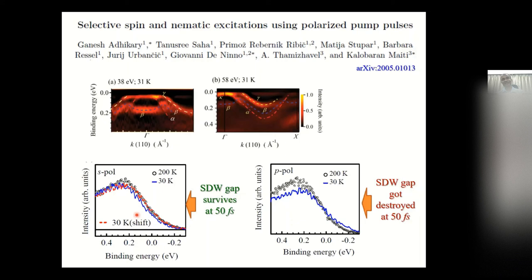What we understand is that this kind of behavior can be probed effectively using this pump-probe method, and you can do symmetry selection by using polarized pump pulses. We have done several experiments using different probe energies like 20 eV and 29 eV, and we often see that in the paramagnetic phase they are almost identical. But in the magnetically ordered phase, looking at the hole density, you can see that P-polarized light shows much more depletion compared to S-polarized light at around 50 femtoseconds. Both observables are complementary to each other.